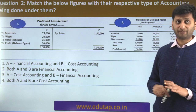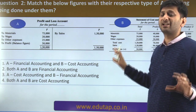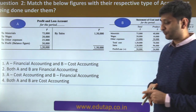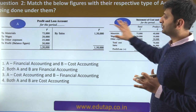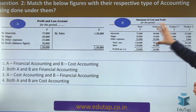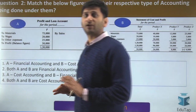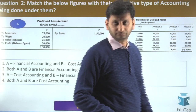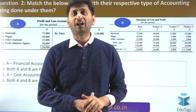Now let's come to the second question. Two figures are given — Figure A and Figure B. You have to see these figures and understand which type of accounting is being done under them. There are various types of accounting: financial accounting, cost accounting, management accounting. This question is about the difference between financial accounting and cost accounting. Look at Figure A and Figure B, and then try to answer. My emphasis in today's session is on explanation and not just the answers.